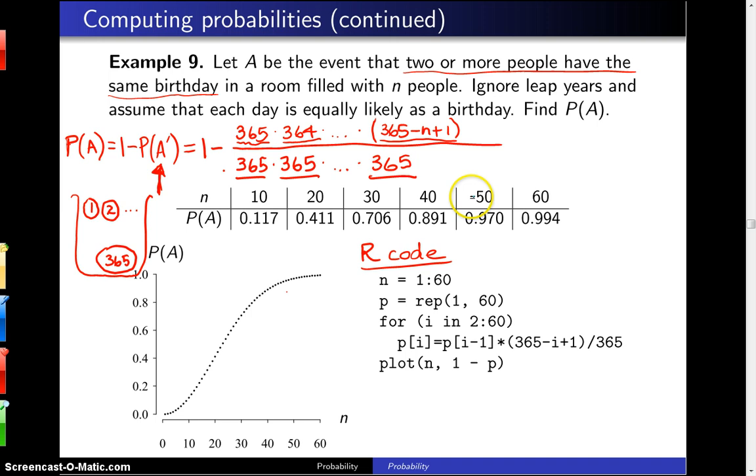At 10, 20, 30, 40, 50, 60 people in the room, you can see this gets up to 1 very quickly. In fact, one of these corresponds to N equals 23. At just 23 people in the room, your probability exceeds one half that you're going to have a match for the birthday. This is a very counterintuitive result, and that is what makes the birthday problem such a well-known problem.